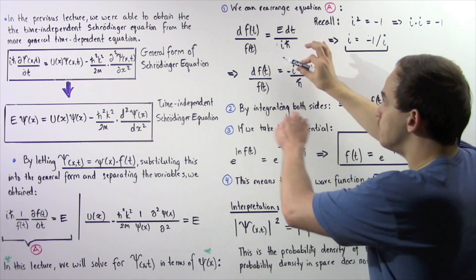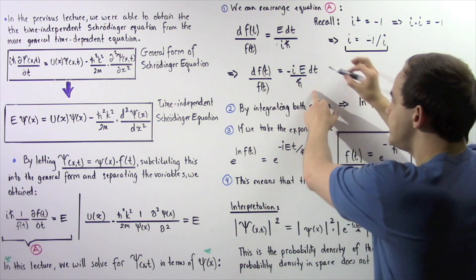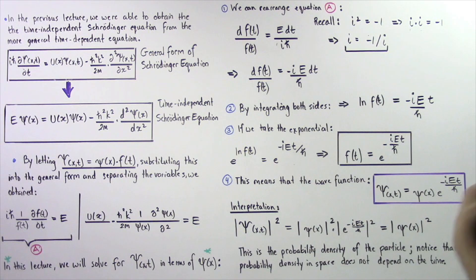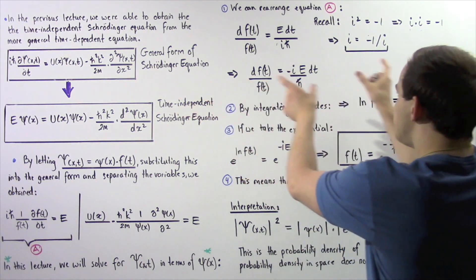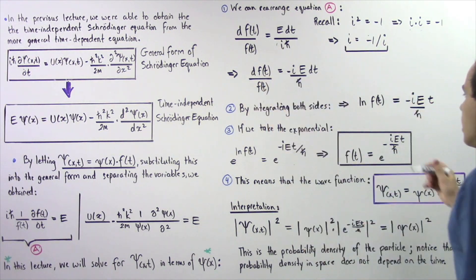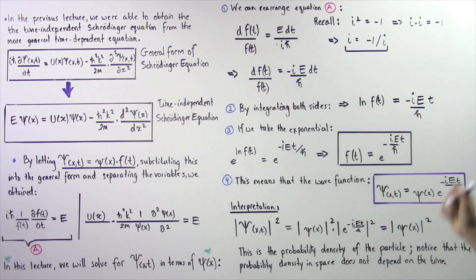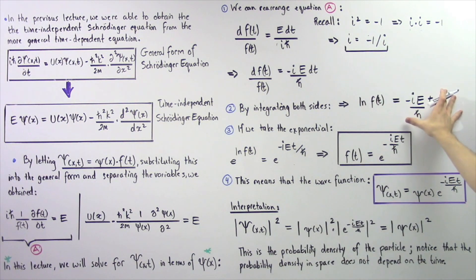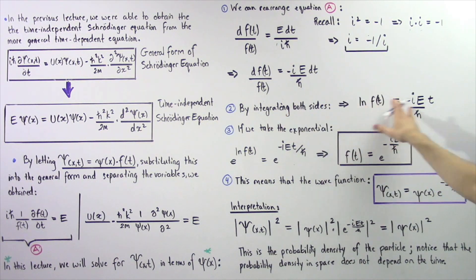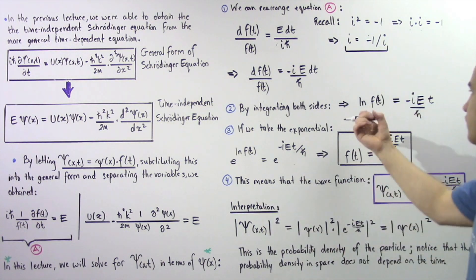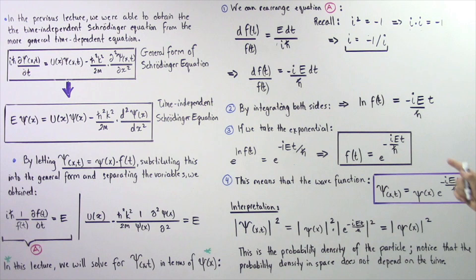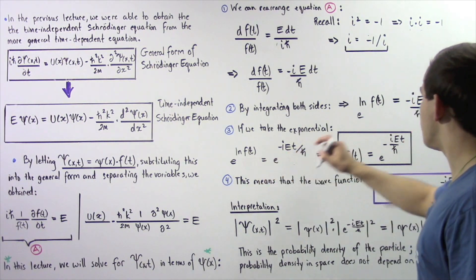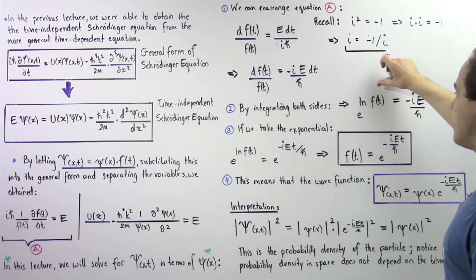Now, df(t) is an infinitely small quantity and dt is also an infinitely small quantity, so we can integrate both sides. Integrating the left side gives the natural log of f(t). Integrating the right side, the dt becomes t, giving negative i multiplied by E divided by h-bar times t. Now let's take this equation and move to step three, where we take the exponential of both sides. Taking the exponential of the left side gives e to the power of the natural log of f(t).